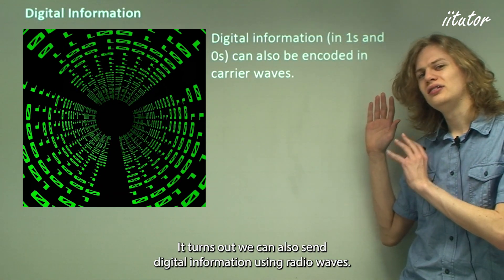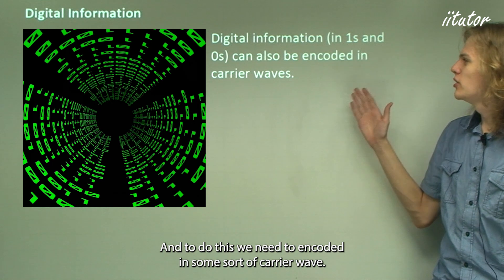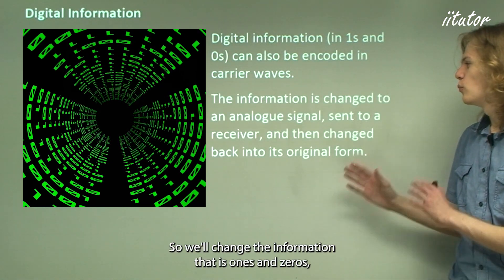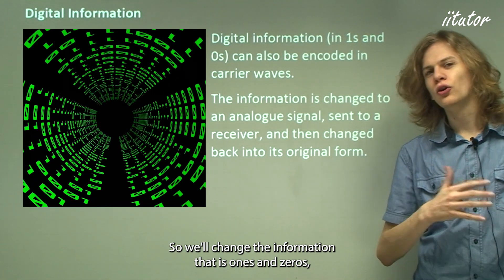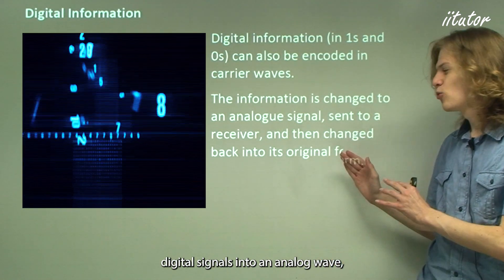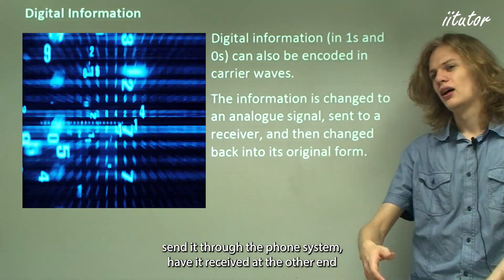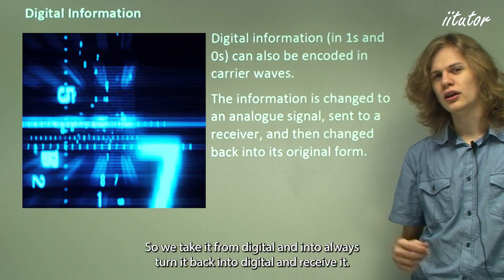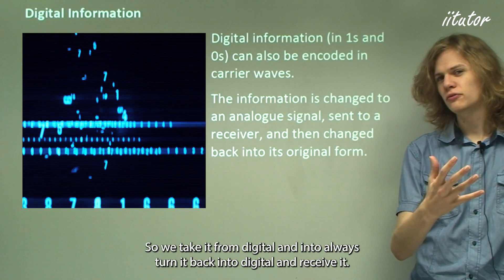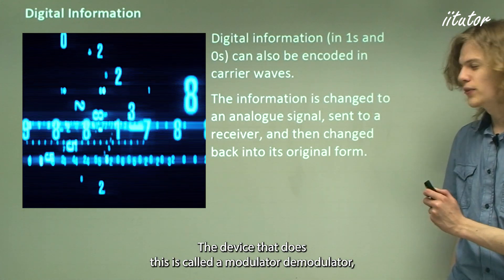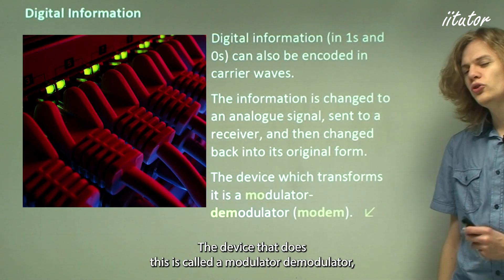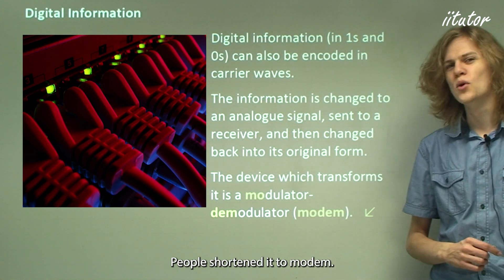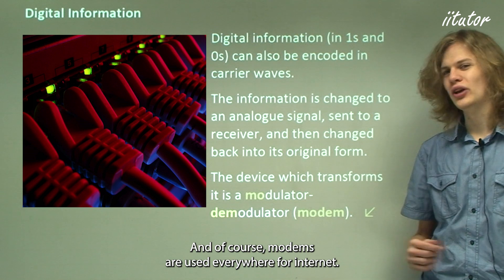We can also send digital information using radio waves. To do this, we convert ones and zeros — digital signals — into an analog wave, send it through the system, receive it at the other end, and convert it back into digital information. The device that performs this conversion — a modulator-demodulator — is shortened to modem. Modems are of course used everywhere for the internet.